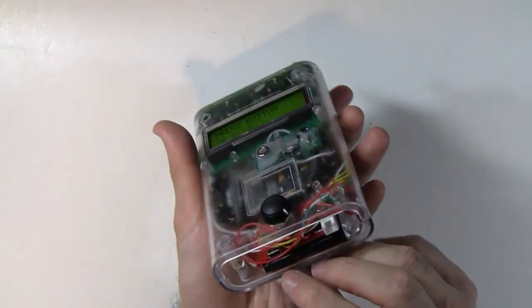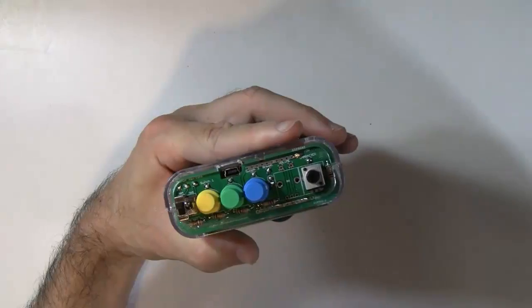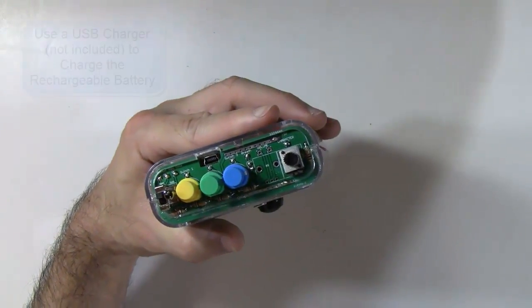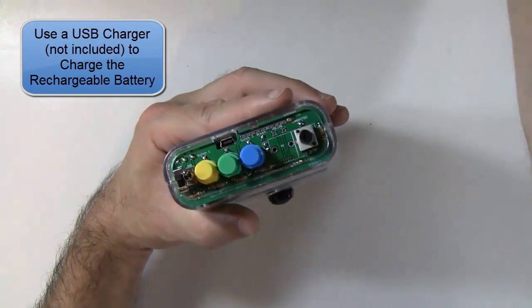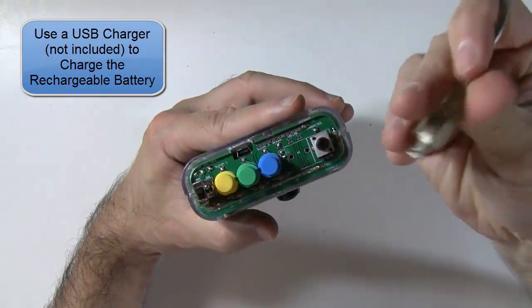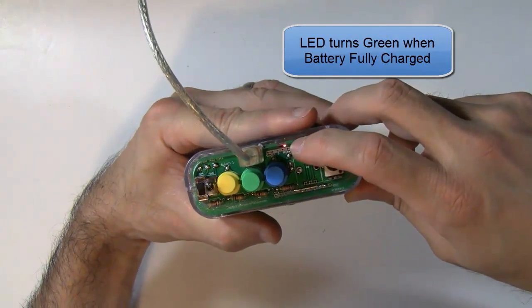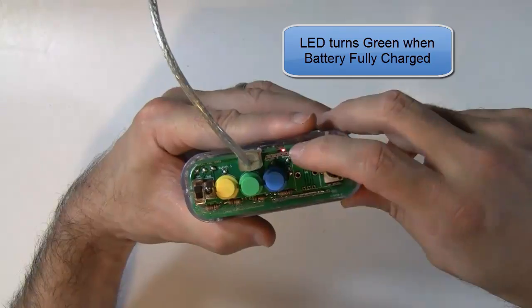So you'll notice that there are two USB ports, one on the bottom and one on the top. The one on the top is for charging. So when your battery runs out, just take your USB charger and pop that in there. And you'll notice that the little LED there turns red. When it's done charging, it'll turn green.